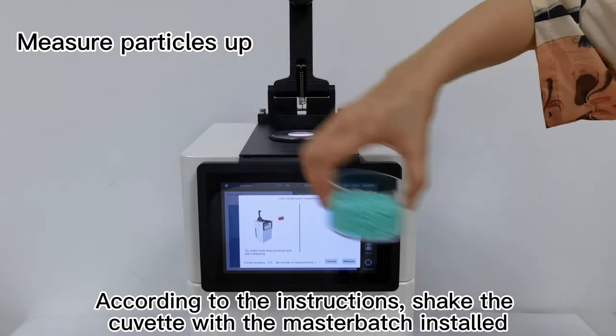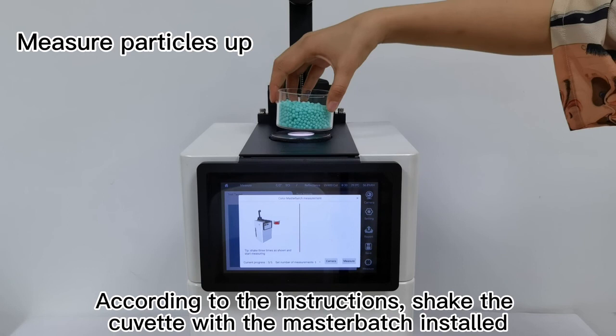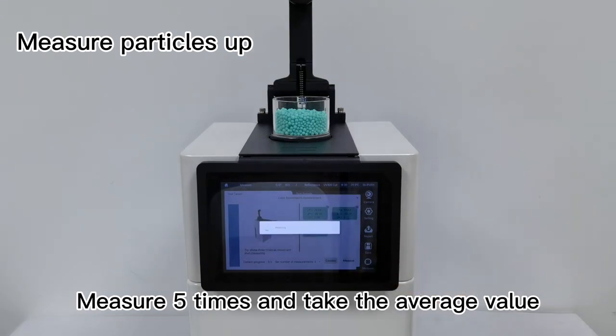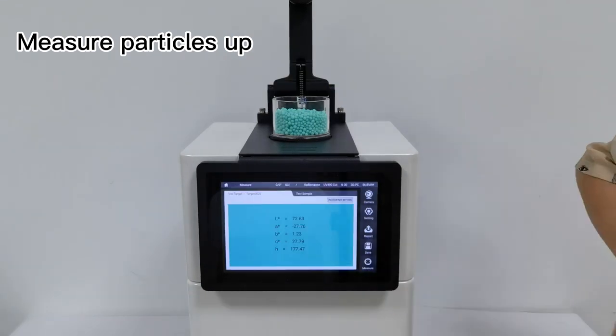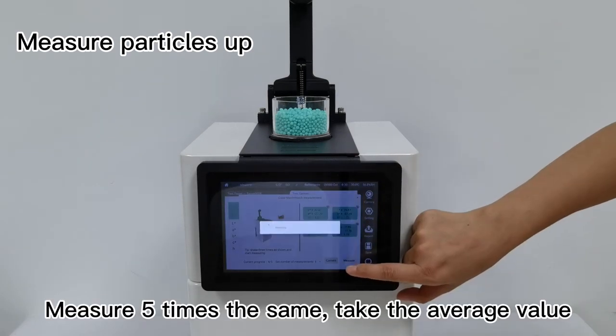According to the instructions, shake the cover with the master batch installed. Measure 5 times and take the average value. Switching to sample measurement, measure 5 times the same and take the average value.